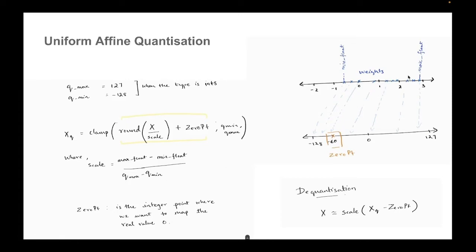Scale is maxFloat minus minFloat divided by Qmax minus Qmin. So basically what you're doing is taking this range. Numerator is this range, maxFloat minus minFloat. Denominator is this range, Qmax minus Qmin. We are dividing that to get scale. So intuitively scale can be thought of as the amount of distance that you move in this floating point number line as you make one step in the integer number line. And then we have zero point.